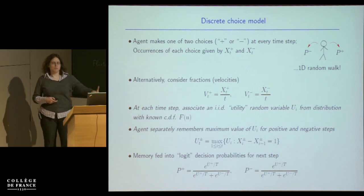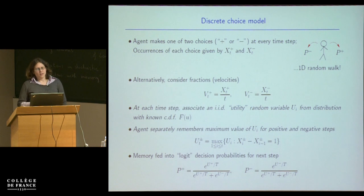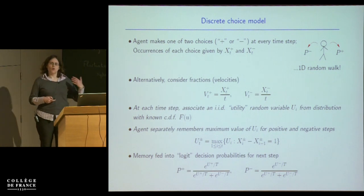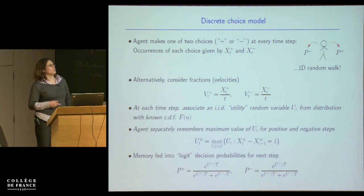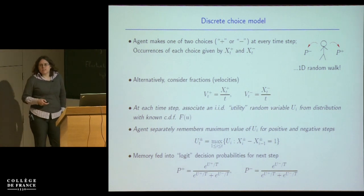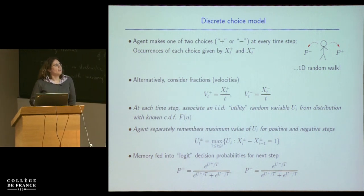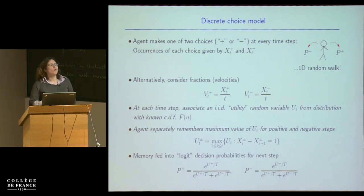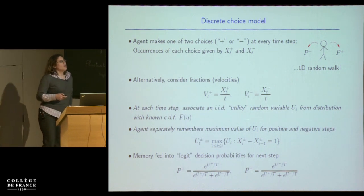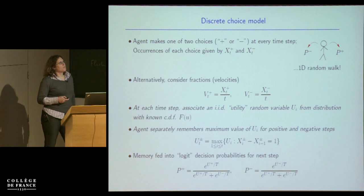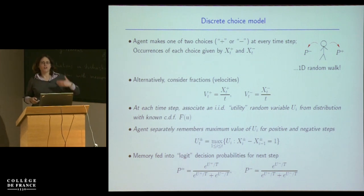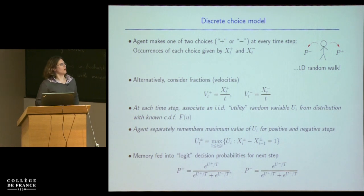It turns out to be more elegant to consider the fraction of steps right and left, or equivalently the velocities. So far that's just an ordinary random walk. The new ingredient is that at each time step I associate an independent, identically distributed random variable called U — meant to remind us of utility, this benefit or experience — from some distribution with a known cumulative distribution function, and it's the same distribution for steps right and left. So a priori the system is symmetrical.